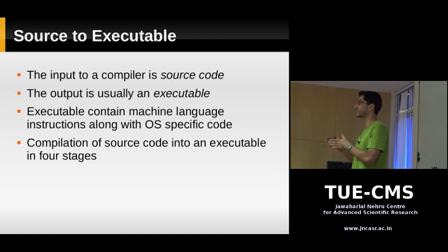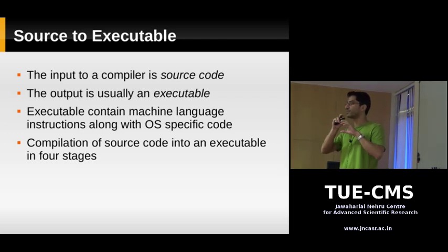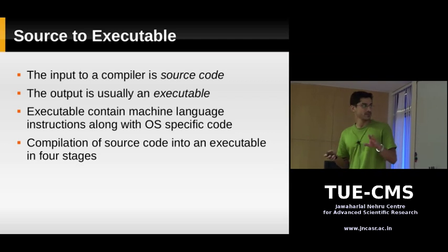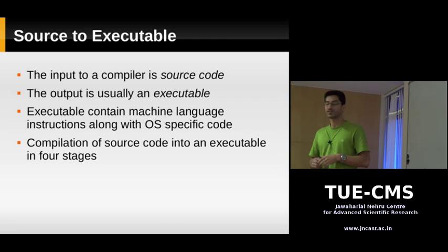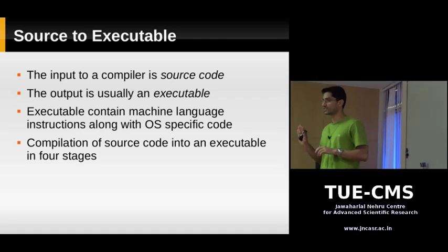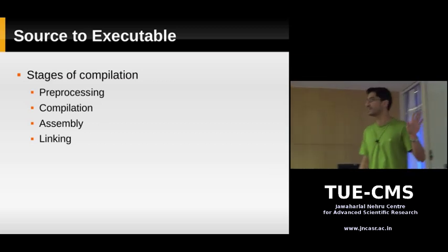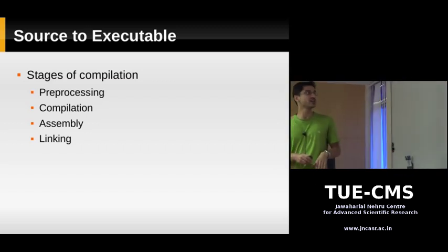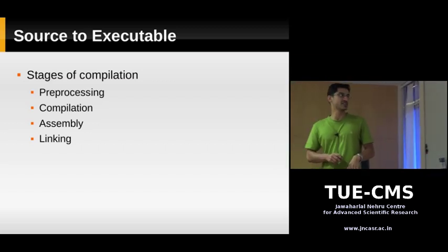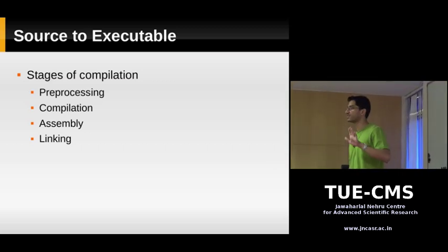If you create an executable for Linux, it's different from the executable you create on Windows. Certain parts might be the same, but there are some operating system specific parts which change. On Linux, the compilation of source code into an executable takes place in four stages: preprocessing, compilation, assembly, and linking. These are the four stages of compilation. You provide the source code, preprocessing is done, then compilation, assembly, linking, and then you get the executable. We'll discuss each of these stages and what happens behind the scenes.